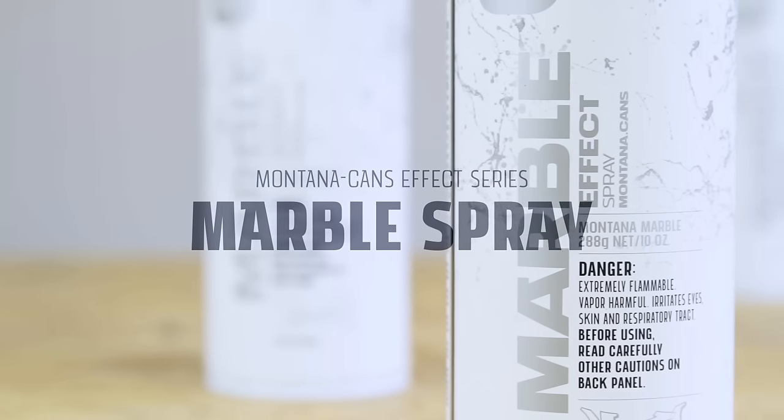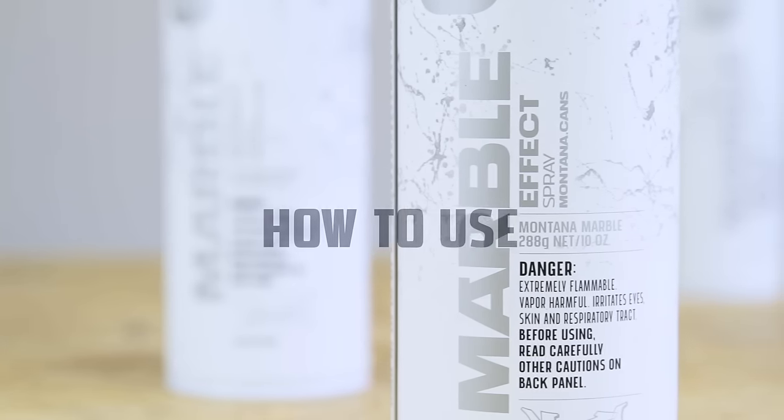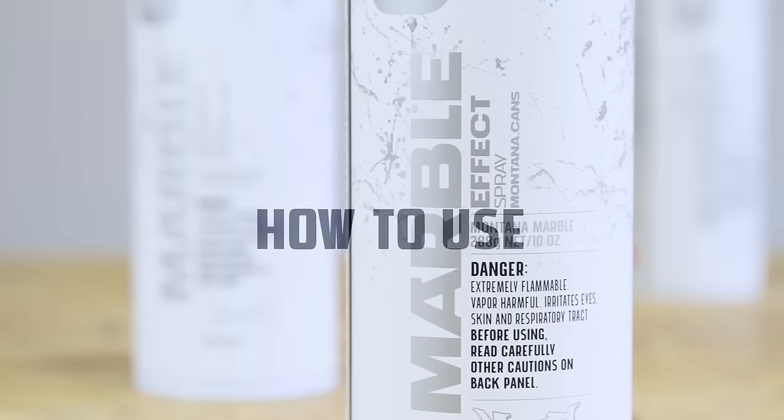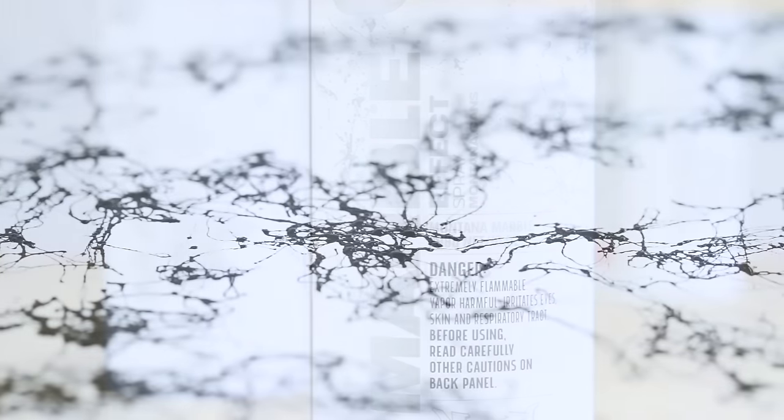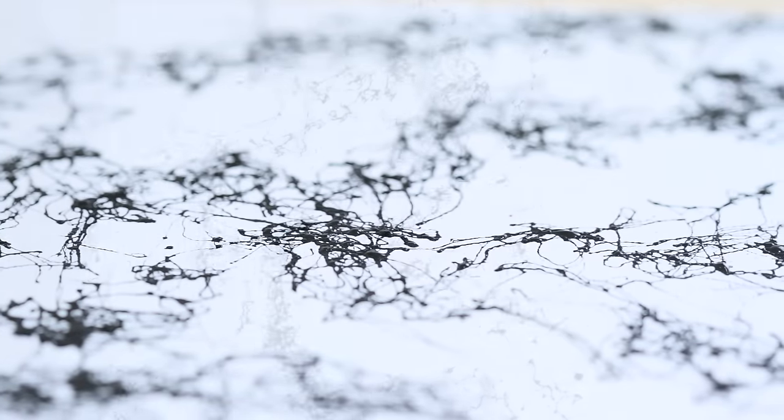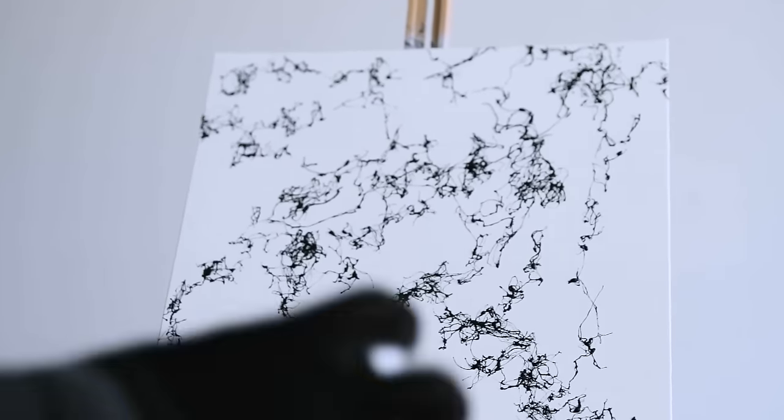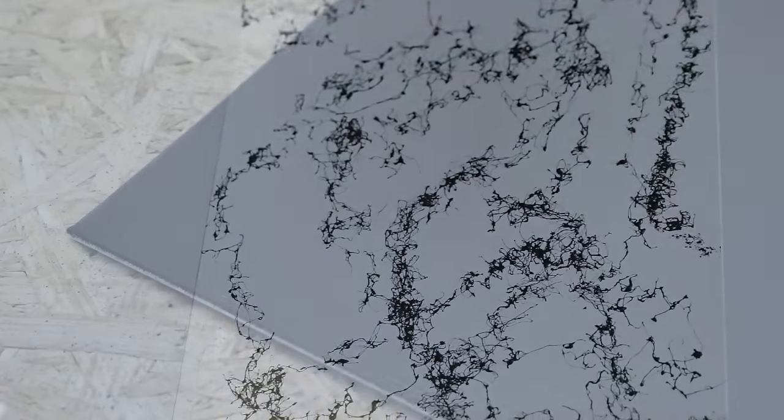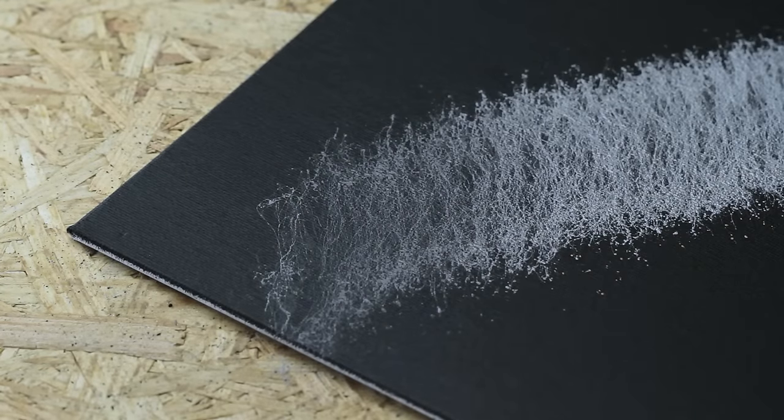The Montana Marble Effect is a high-covering spray paint for deceivingly realistic marble effects. The Marble Effect is formed by very fine-colored paint strands on the surface area of the object. The area to be sprayed is not entirely covered and will stay partially visible.